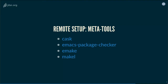You need tooling to launch all the other tools automatically on a continuous integration server. I listed four tools here: Cask is the famous, well-established one that many projects use. Emacs-package-checker is quite new and uses the Nix package manager. Emacs and Makel share the same philosophy of using a Makefile to help your workflow. In the next slide I'll present Makel, which is the one I made, but the others are worth checking out.